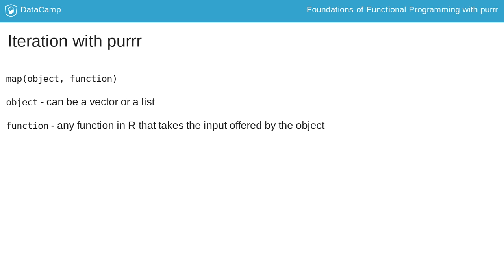Map is very powerful, and here we are going to show some relatively simple examples and build complexity throughout the chapters of this course. First, it's important to understand that map takes two arguments. The first is the .x argument, which is an object — either a list or a vector. The second argument is the .f argument, which is a function. The different elements of the .x argument will be input into the .f argument for iteration.